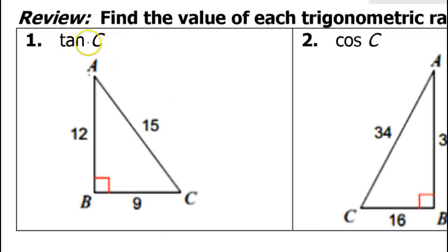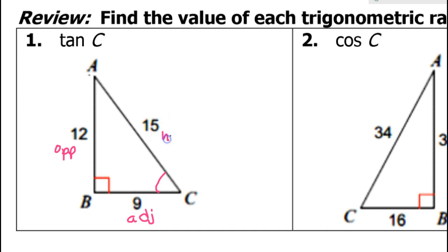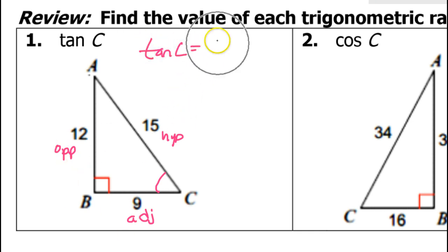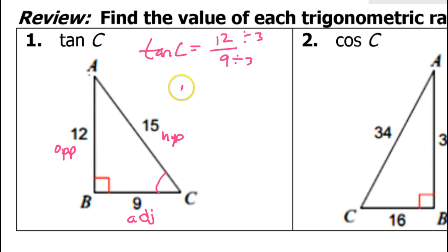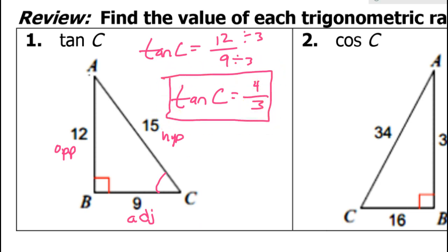Tangent of angle C. From the perspective of angle C, the 12 is opposite because it's across from angle C. The 9 is adjacent because it's right next to angle C. And 15 is the hypotenuse. So, because tangent is opposite over adjacent, that is 12 over 9. Both are divisible by 3, so the tangent of C equals 4 over 3. Always reduce.